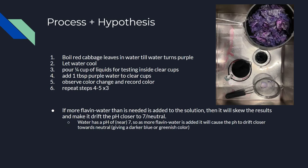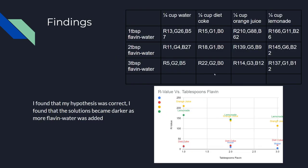Now I'm going to go to my results. Off to the top right here you can see my data — the raw data — the RGB values of the different liquids that I got.